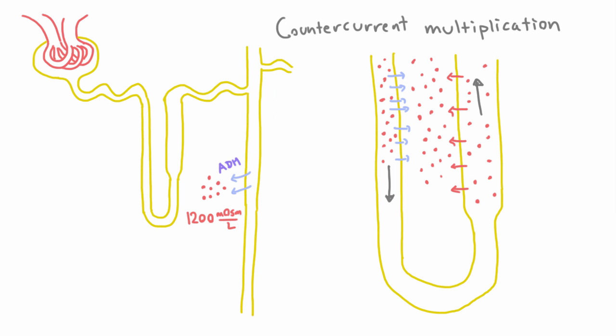And I think you can see where this process is going. Basically, the idea is because you're constantly shuttling the higher concentration side into the loop of Henle and shuttling out the lower concentration side, this just multiplies and multiplies, which is why we call it multiplication, until we reach our maximum possible concentration here in the medulla, which is 1200.